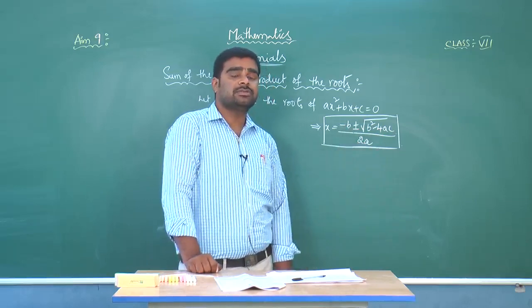Next, let us take the product of the roots, alpha into beta. Alpha into beta equals (minus B plus square root of B squared minus 4AC) by 2A, multiplied by (minus B minus square root of B squared minus 4AC) by 2A. Observe that the numerator is in the form of (A plus B) into (A minus B), and we know that equals A squared minus B squared.